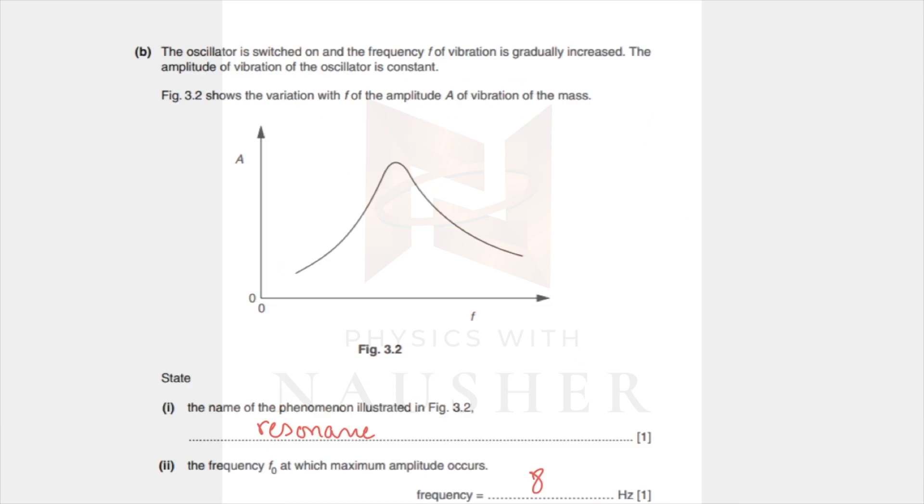In the next part, what is this phenomenon? Whenever they give you an amplitude frequency curve, the phenomenon is always resonance, and the frequency f naught at which the maximum amplitude occurs should be equal to the frequency of the system, which is 8 hertz.